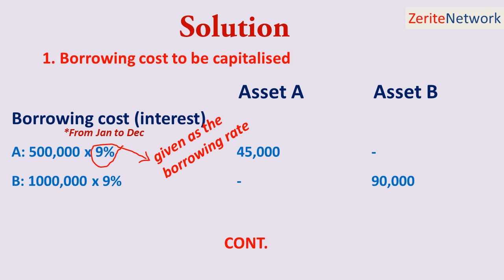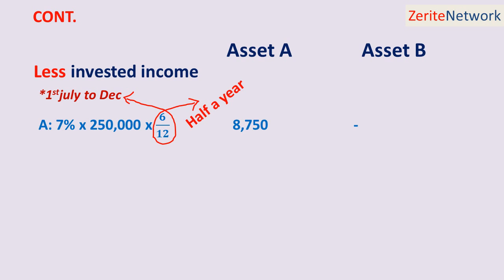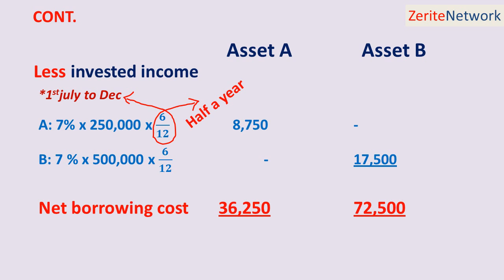Less income: from 1st July to December, we are told that the remaining funds were to be invested temporarily, meaning this is now income and not a cost — it's a cash inflow. It can only affect the second half of the investment. So that becomes 7% times $250,000 times 6/12, since it only covers half a year from July to December. That gives us $8,750. And for Asset B, 7% times $500,000 times 6/12 gives us $17,500. The net borrowing cost for Asset A is $36,250, and for Asset B it's $72,500. That gives us the net borrowing cost to be capitalized.